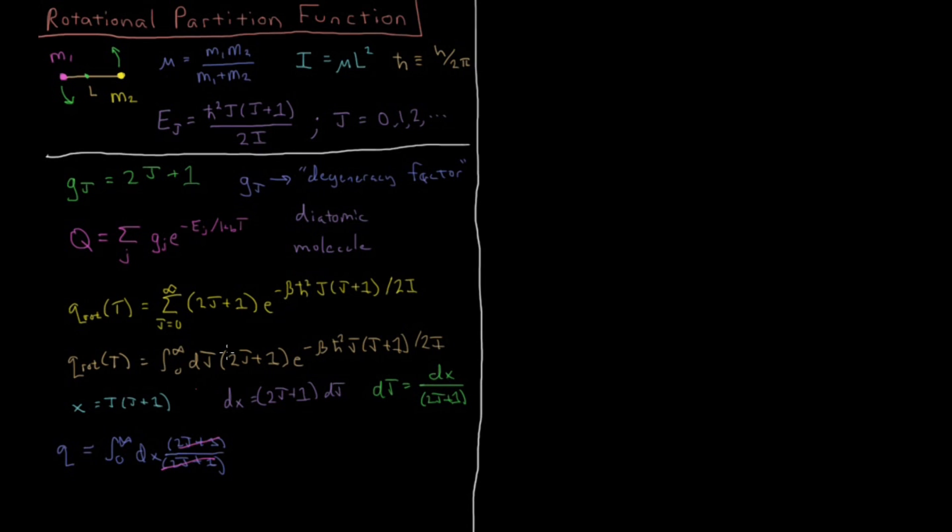This prefactor here is going to be gone. Then we're just left with our exponential, e to the minus beta h-bar squared j times j plus 1, which is just equal to x over 2i.